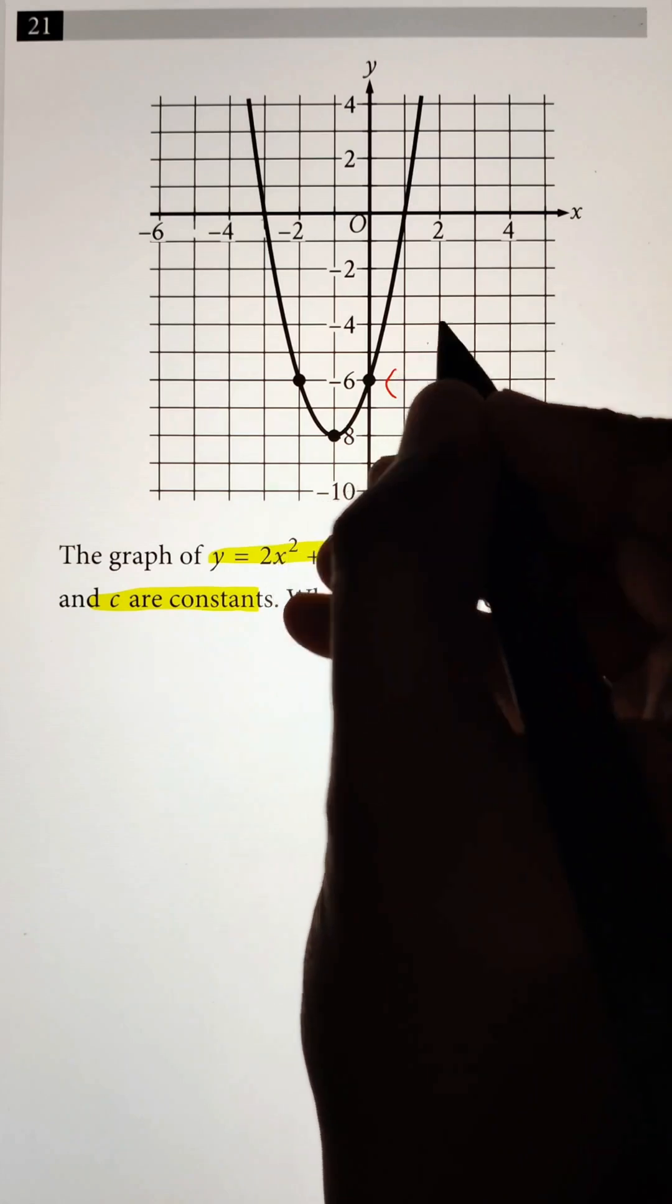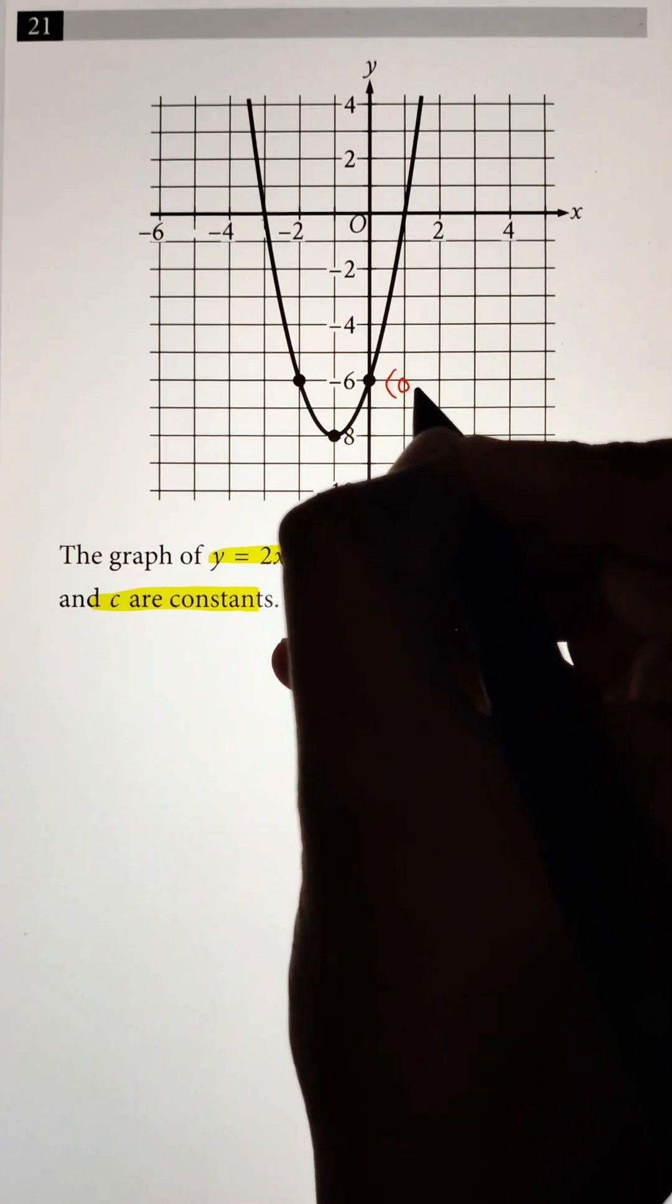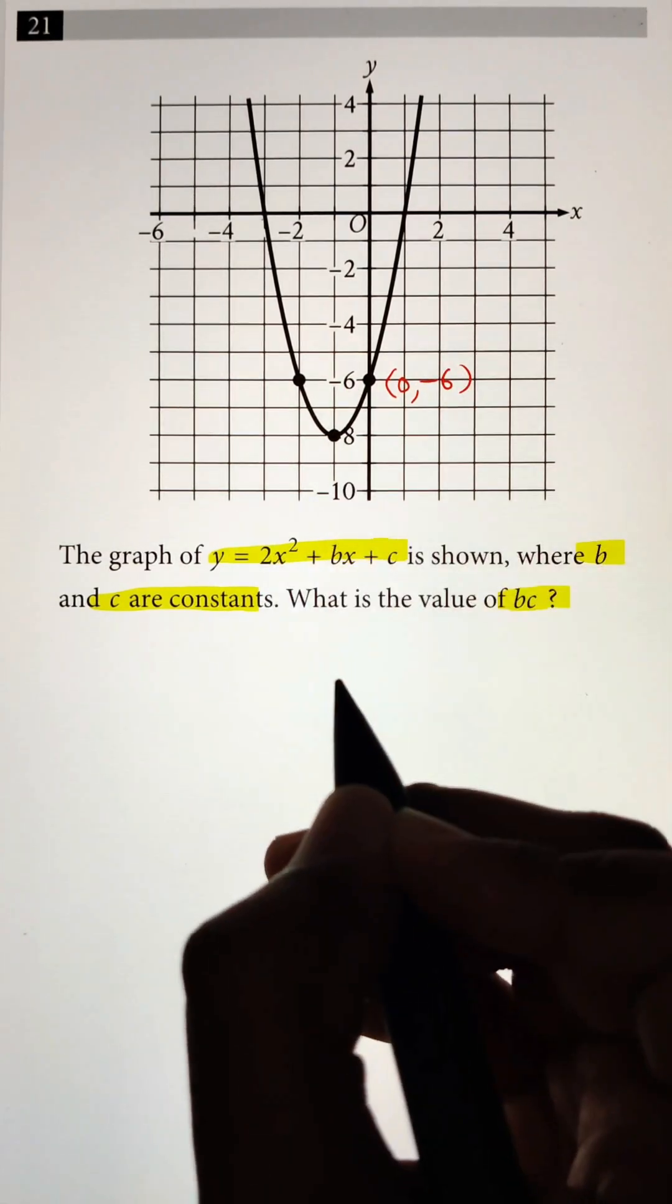This is the point coordinate where my x value is zero and the y value is negative six.